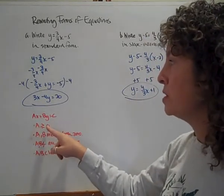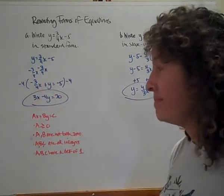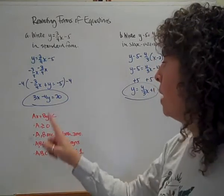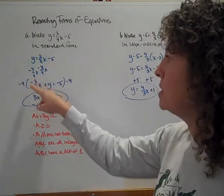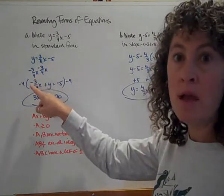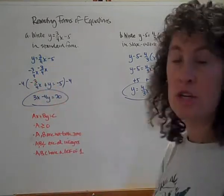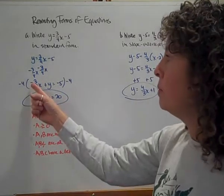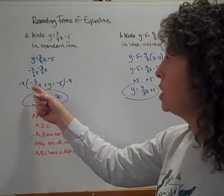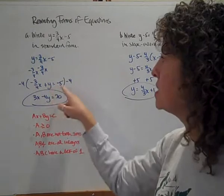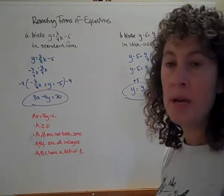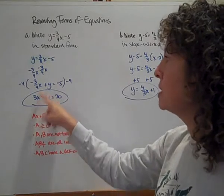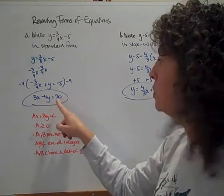A has to be greater than or equal to zero. I don't have that, it's negative. Also, a, b, and c all have to be integers, so I can't have any fractions. I'm going to deal with the fact that a is negative and I've got some fractions. I'm going to multiply by a negative and by a common denominator. I'm going to multiply by negative 4, which gives me 3x minus 4y equals 20.